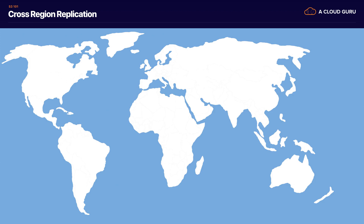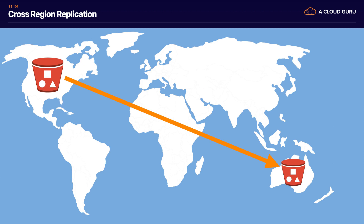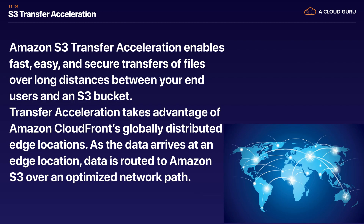What is cross-region replication? If you've got a bucket in US East 1 and you want to automatically replicate your objects to another bucket in, say, Sydney — for high availability and disaster recovery — cross-region replication does exactly that. As soon as you upload an object to your US East 1 bucket with cross-region replication turned on, those objects will automatically be replicated to your bucket in Sydney. We're going to have a lab on that.